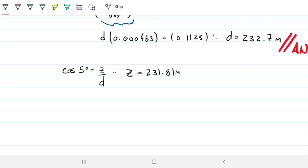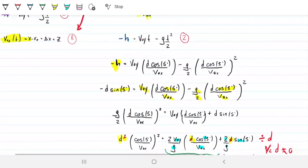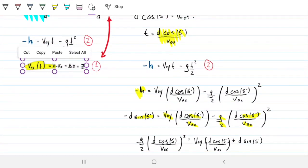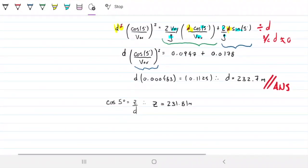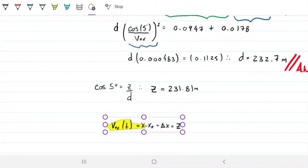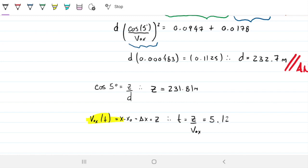And with that we can easily find what is time. Remember that we solved time for, we had a relationship between time and the VOX. The VOX was 35.31. So time taken is 5.12 seconds.